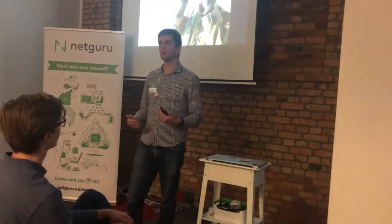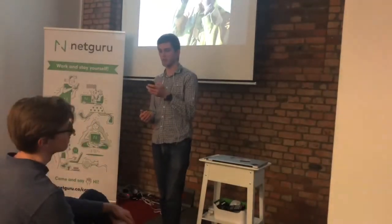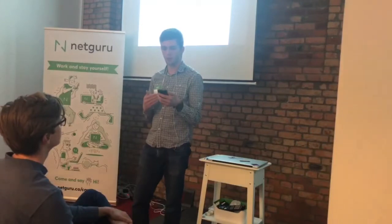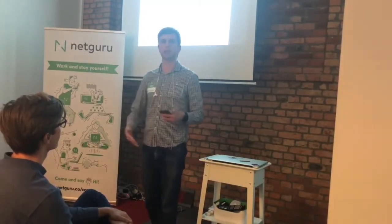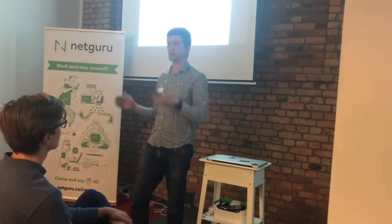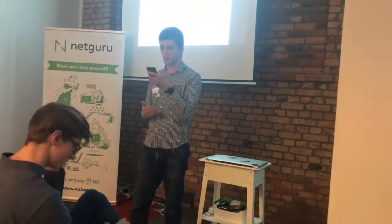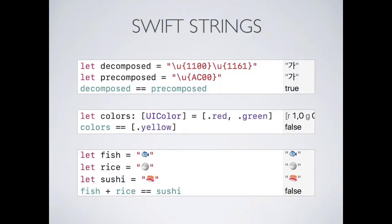You can also see these same patterns in third-party code — third-party being open source, but also Foundation, the Swift standard library, and UIKit. One example from the Swift standard library is strings in Swift. In Swift 2 and 3, strings were not collections, because strings are actually very complicated. Two Unicode characters can make up one Korean character — two strings that look different between quotation marks can evaluate to the same Korean character and be equal. That creates problems if we try to treat a string as an array.